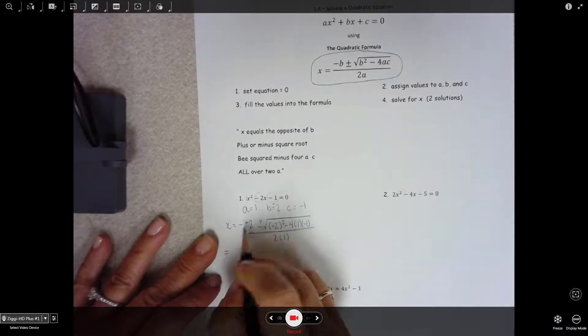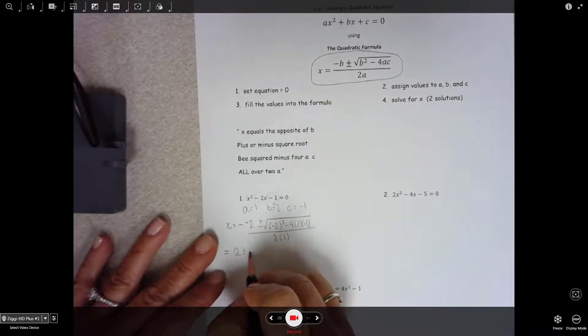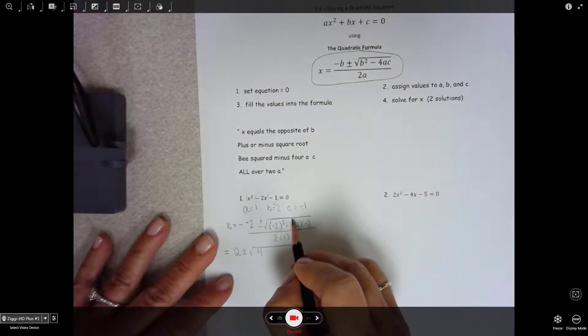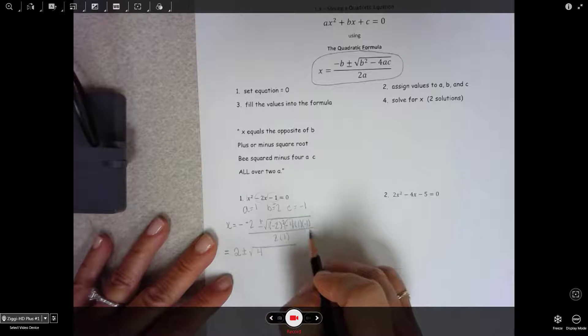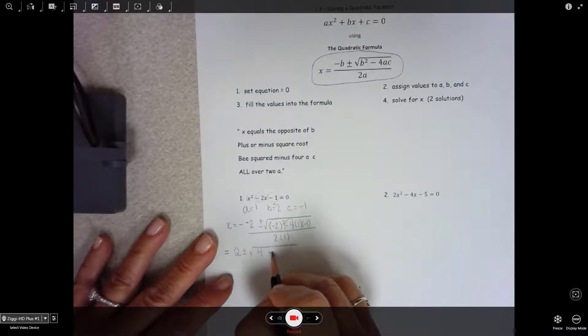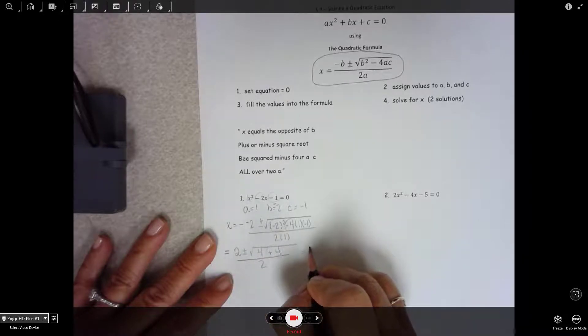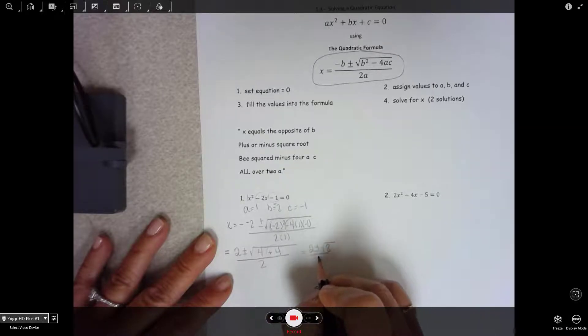So the opposite of a negative is a positive plus or minus B squared or anything squared is positive. And then this is the catchy part. You have a negative times a positive times a negative. So all of this will be a positive 4. That's tricky sometimes. People get their signs confused. 2 plus or minus square root of 8 over 2.